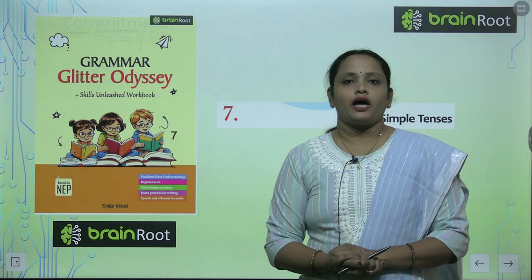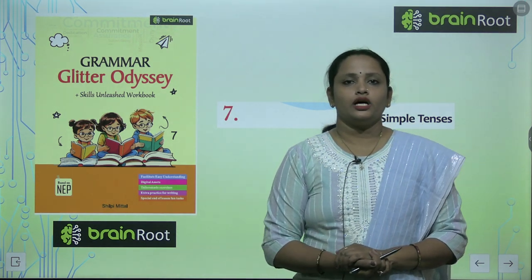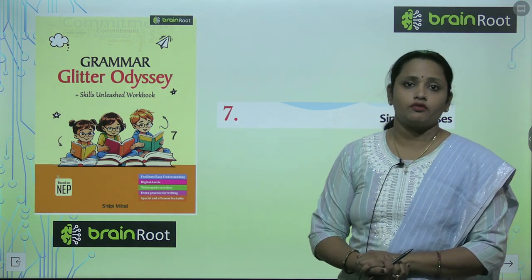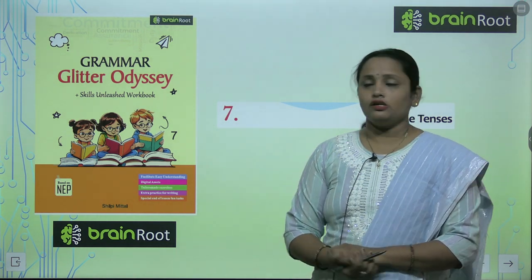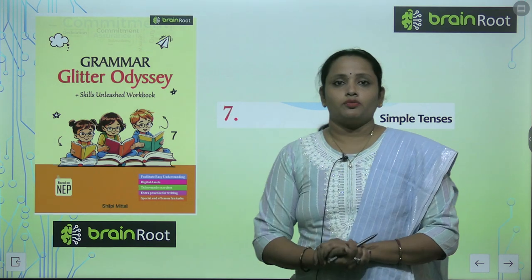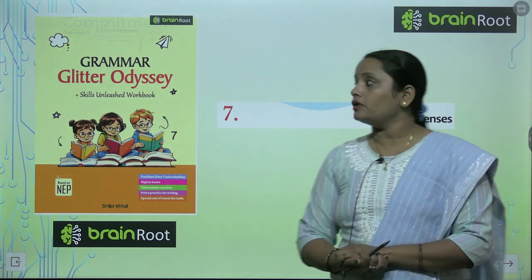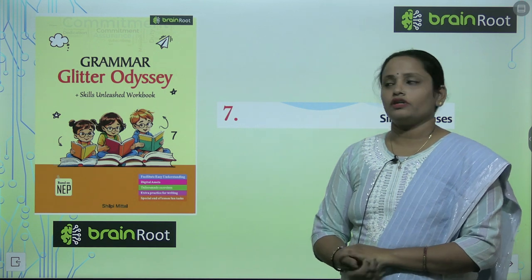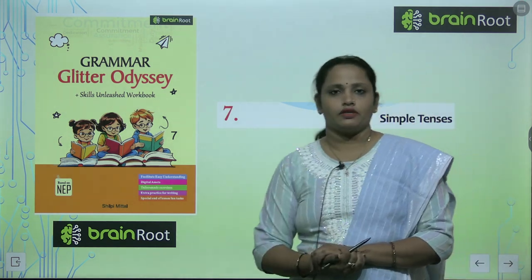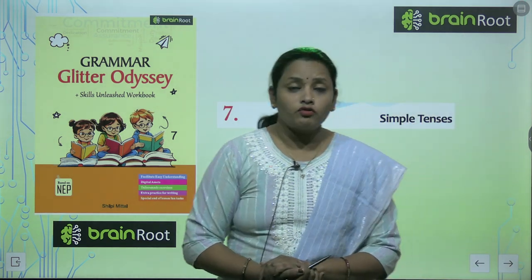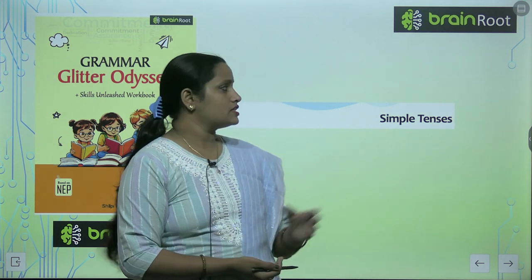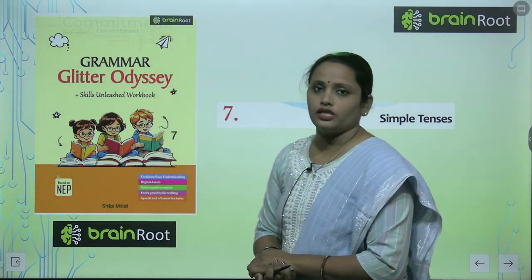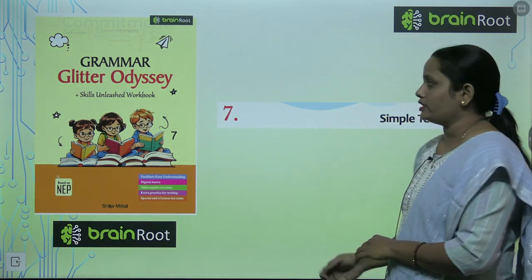Hello my dear kids, welcome back to the Brain Roots series by Amit Publishing House. I am Vandana and we are learning grammar class 7. This is a book called Grammar Glitter Odyssey and today we are going to start with chapter number 7. The name of the chapter is Simple Tenses, so we are going to learn about some tenses.